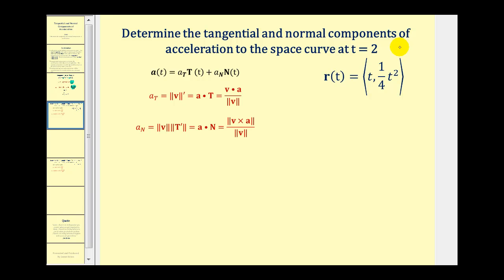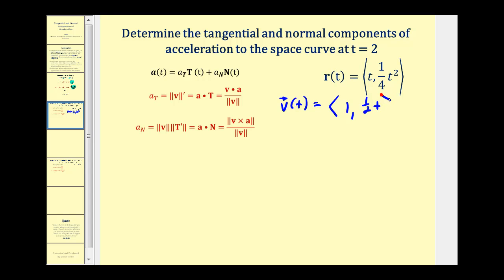We want to determine the tangential and normal components of acceleration when t equals two for this vector valued function. We start by finding the velocity and acceleration vector valued functions. The velocity vector valued function is the derivative of the given function, giving an x component of one and a y component of one half t. The acceleration vector valued function has an x component of zero and a y component of one half.